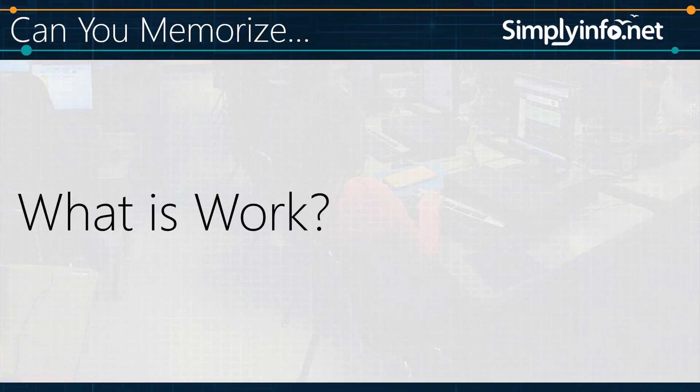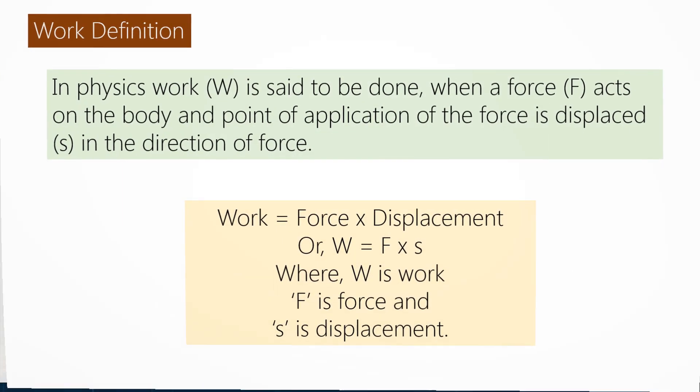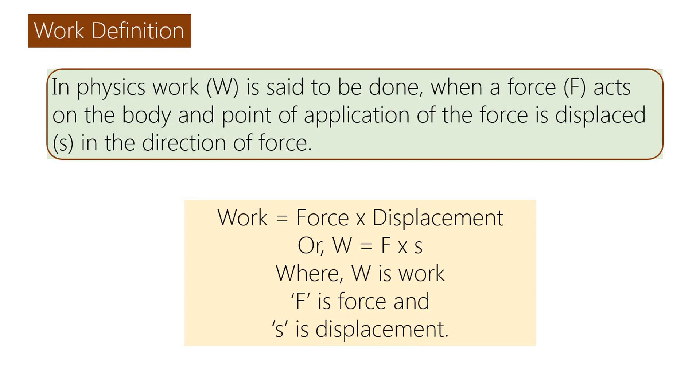Can you memorize what is work? In physics, work W is said to be done when a force F acts on the body and point of application of the force is displaced S in the direction of force. Work equals force times displacement, or W equals F times S, where W is work, F is force, and S is displacement.